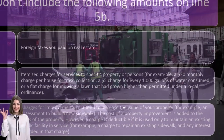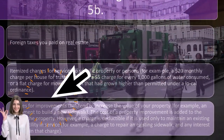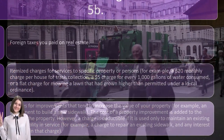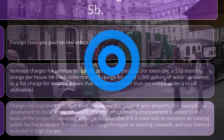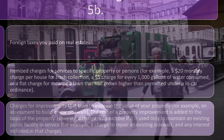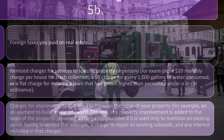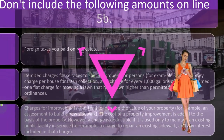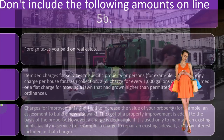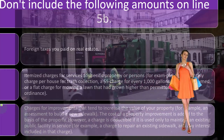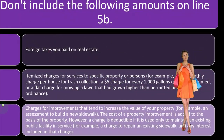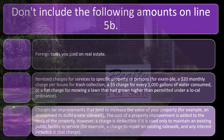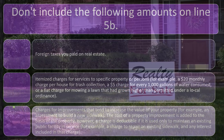Also excluded are charges for improvements that tend to increase the value of your property — for example, an assessment to build a new sidewalk. If you're paying for an assessment to build a sidewalk, you're paying for an improvement to the home. The cost of property improvement is added to the basis of the property, meaning you're increasing the value of the home so that when you sell it, you'll have less of a gain. That's when you might have a tax benefit from it.